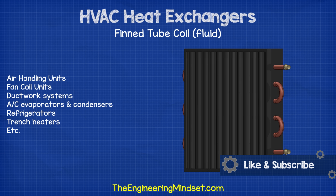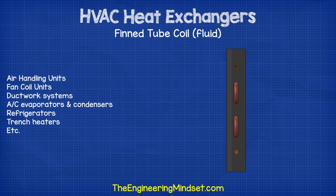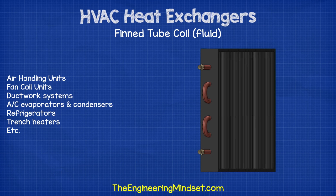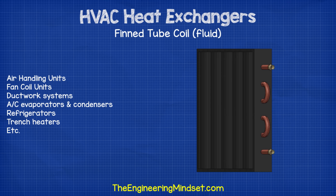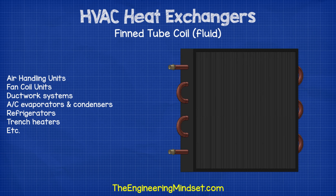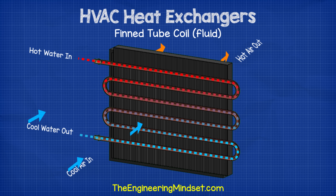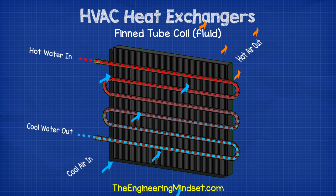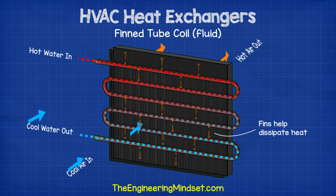Thin tube coil heat exchangers — often referred to simply as the coil, e.g. the heating or cooling coil — are extremely common. You'll find these in air handling units, fan coil units, ductwork systems, evaporators and condensers of air conditioning systems, on the back of refrigerators, in trench heaters, and more. Water, refrigerant or steam usually flows through the inside and air flows on the outside. The fins connect between all the pipes, sitting in the path of airflow, and act as an extension to the surface area of the pipe to help pull heat into the air.